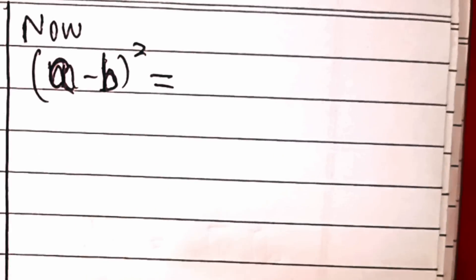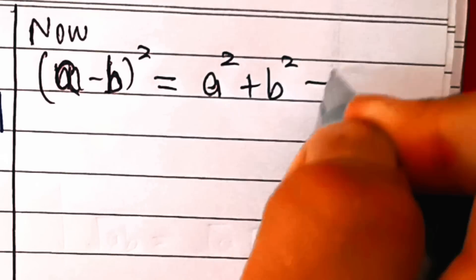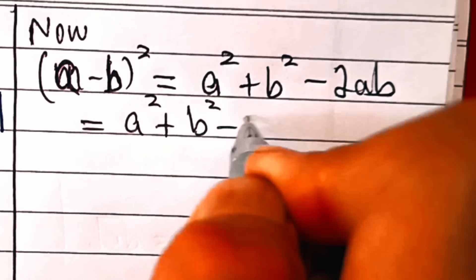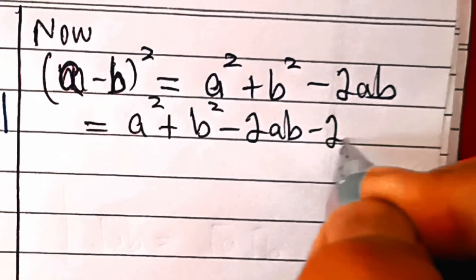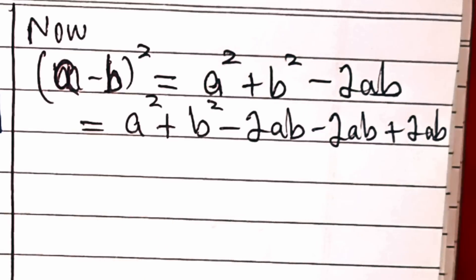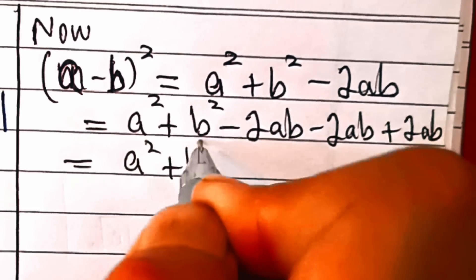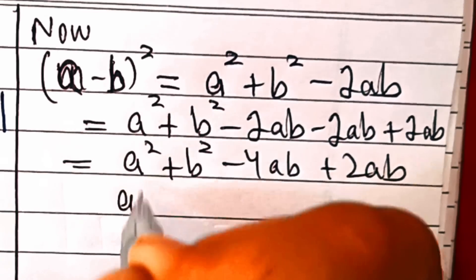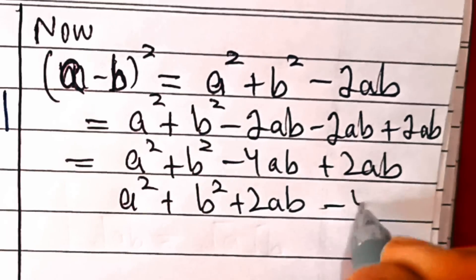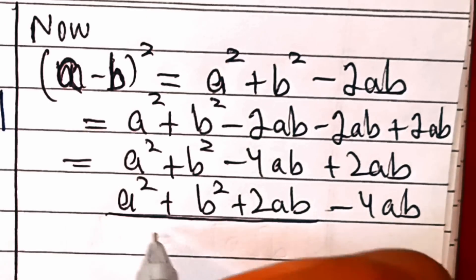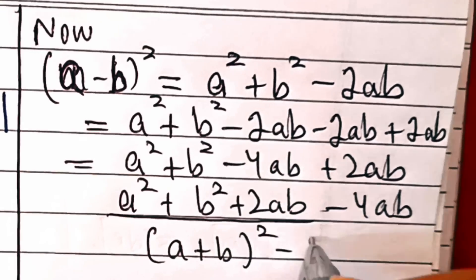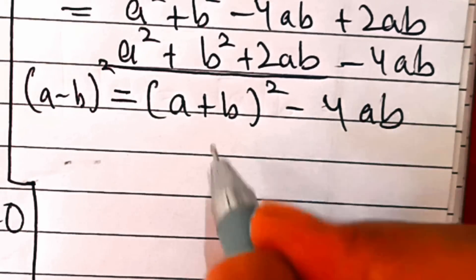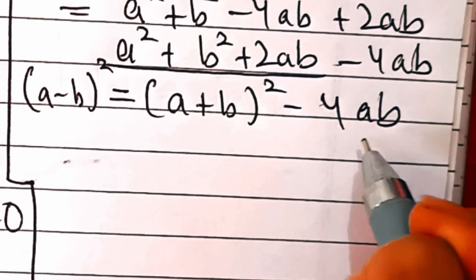We know that a minus b whole squared equals a squared plus b squared minus 2ab. We can rewrite this as a squared plus b squared plus 2ab minus 4ab, which equals a plus b whole squared minus 4ab. From equation 3, a plus b equals minus 1, and from equation 5, ab equals minus 72.